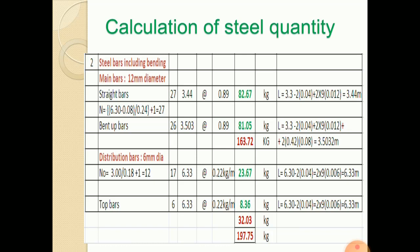Length of each bar will be 3.3 minus two times of side covers plus two times of 9D, that is, bent up length will be 9D. Both sides will be 2 into 9D. Total length works out to 3.44 mm.